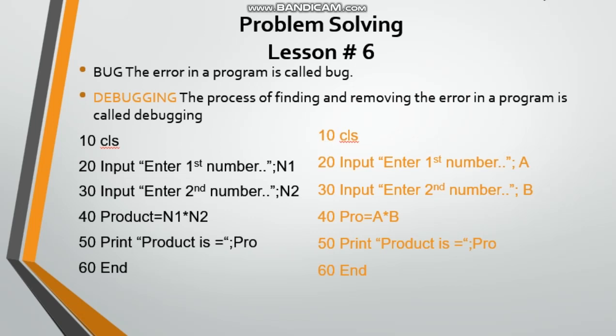We have two examples which can help us understand the difference between bug and debugging. In the first program, we have CLS, input enter first number N1, input enter second number N2, Product=N1*N2, print product is Pro, and End.